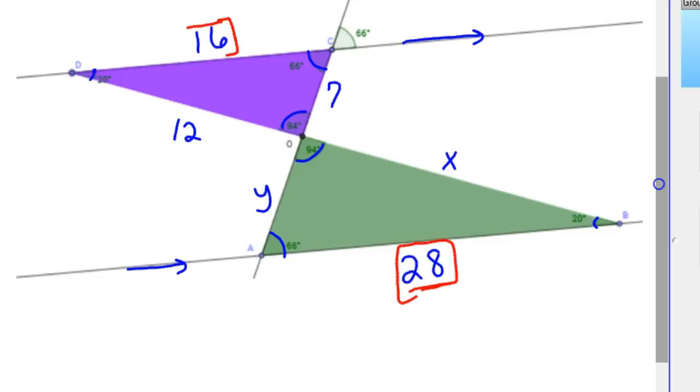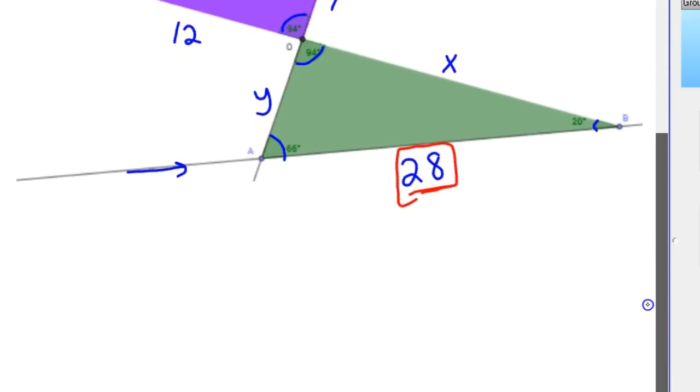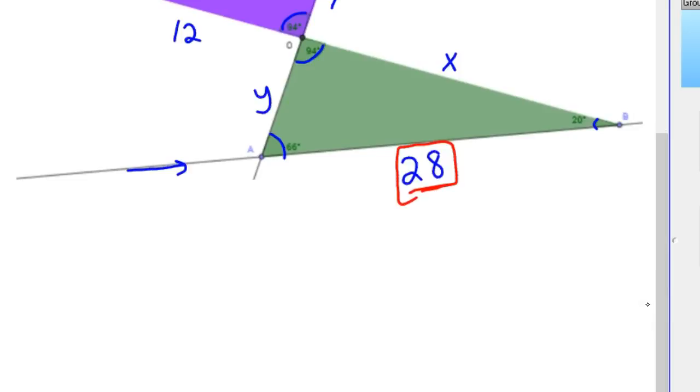So 28 and 16 correspond, so we're going to set up a scalar factor. Now you can either go big to little or little to big. I'll go big to small. So in our case, we know that 28 compares to 16. So there's my scalar factor. It's always a good idea to reduce that. If you took a 4 out, that would be 7 over 4 as a scalar factor.